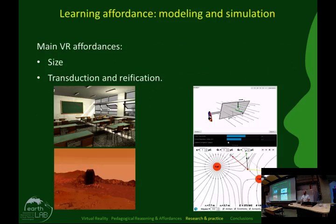The next learning affordance is modeling and simulation, based on size, transduction, and reification. We can model and simulate a real classroom — this is an example on earthquake education. Or we can simulate the planet Mars: we used data from NASA to model and simulate Mars and we went there just a few days before NASA. Here we simulate magnetic and electric fields.